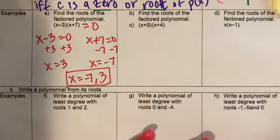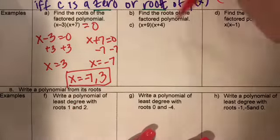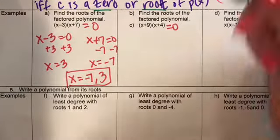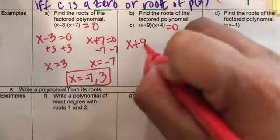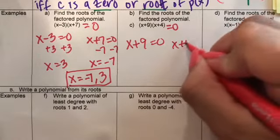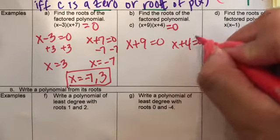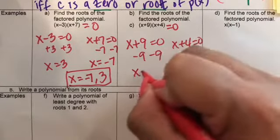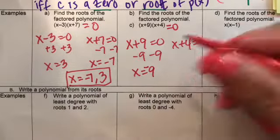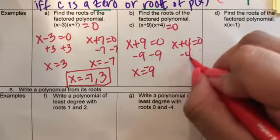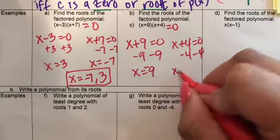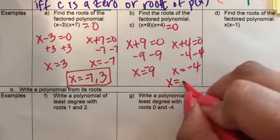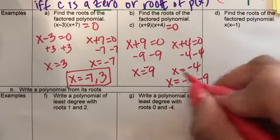Same definition — set equal to zero. X plus nine equals zero gives X equals negative nine, and X plus four equals zero gives X equals negative four. So the roots are negative four and negative nine.